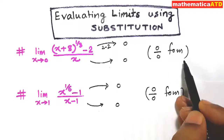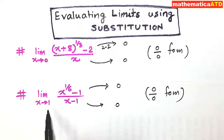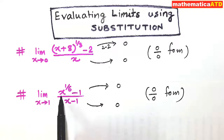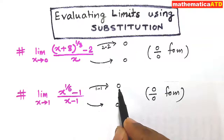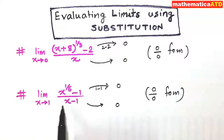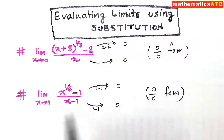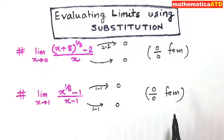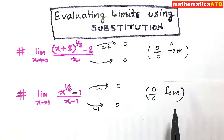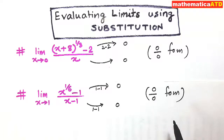That means the indeterminate form. In the second example also, if x is equal to 1, then 1 to the power 1 sixth minus 1 means 1 minus 1, this is 0. And the denominator is 1 minus 1, again 0. So this is also in 0 by 0 form — the indeterminate form. So in such cases, we need to simplify our expressions, and one technique is rationalization.